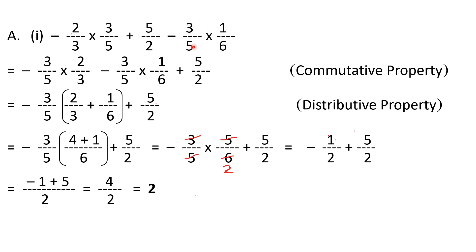We look for something common in two terms. We can see three by five appears here and here. I will bring these two terms together. Using the commutative property — a into b equals b into a — I rewrite minus two by three into three by five as minus three by five into two by three. Then I regroup: plus five by two comes to one side, and minus three by five into one by six comes next to the other three by five term.